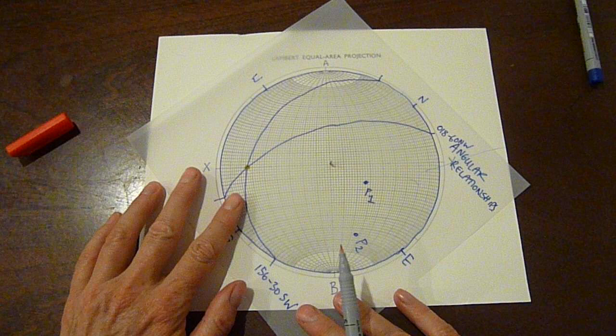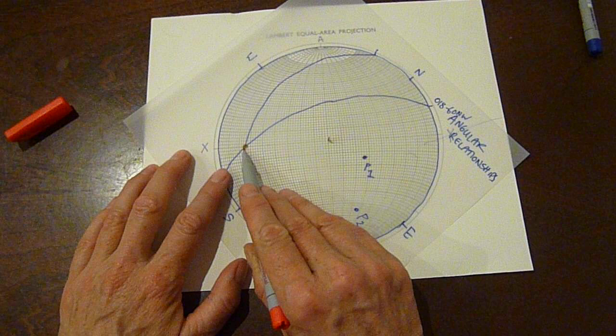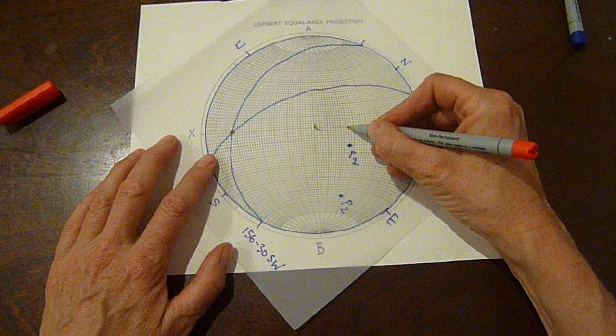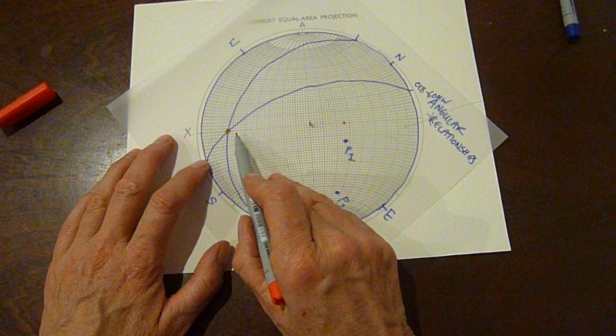And use it as a pole. I can see from this side it's plunging 10, 20, 22, 24, maybe 26 degrees. So I can count from the center of the net: 10, 20, 26 degrees. And that should be the plane that is 90 degrees away from that pole.